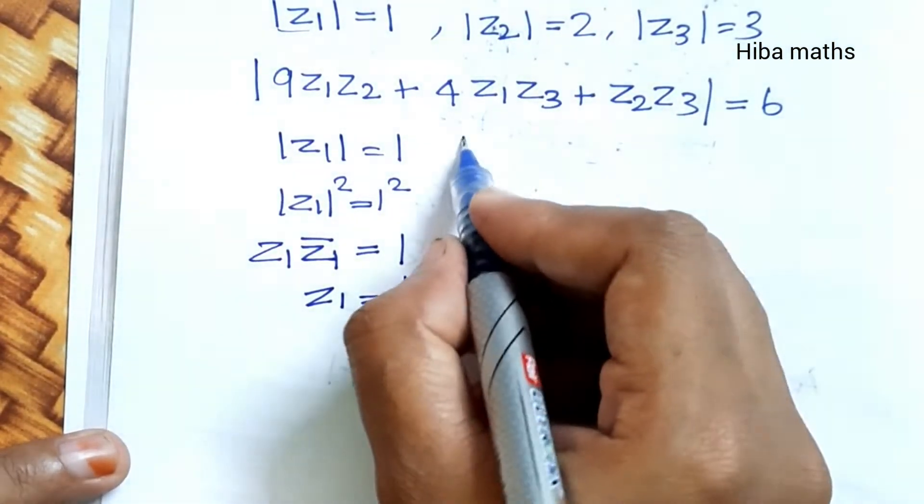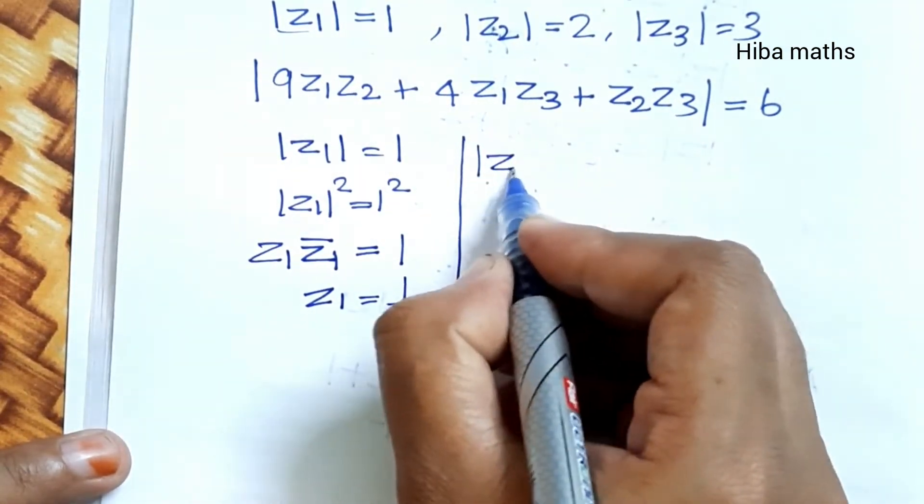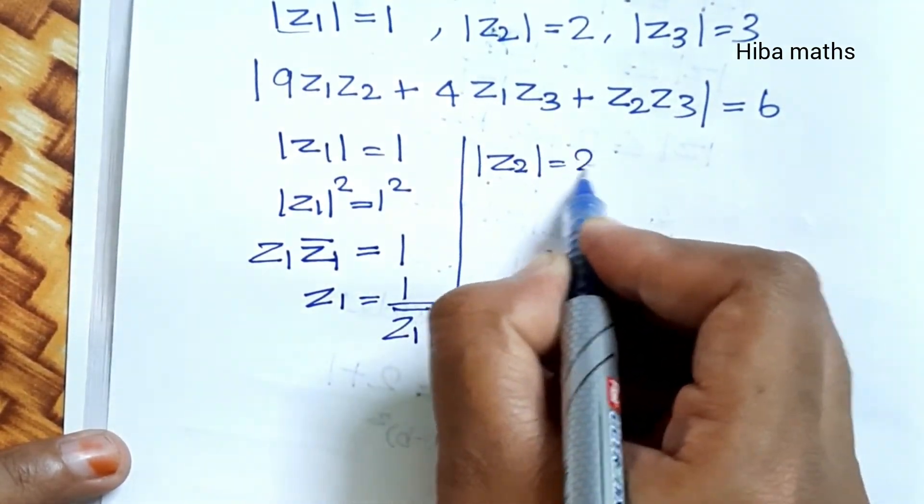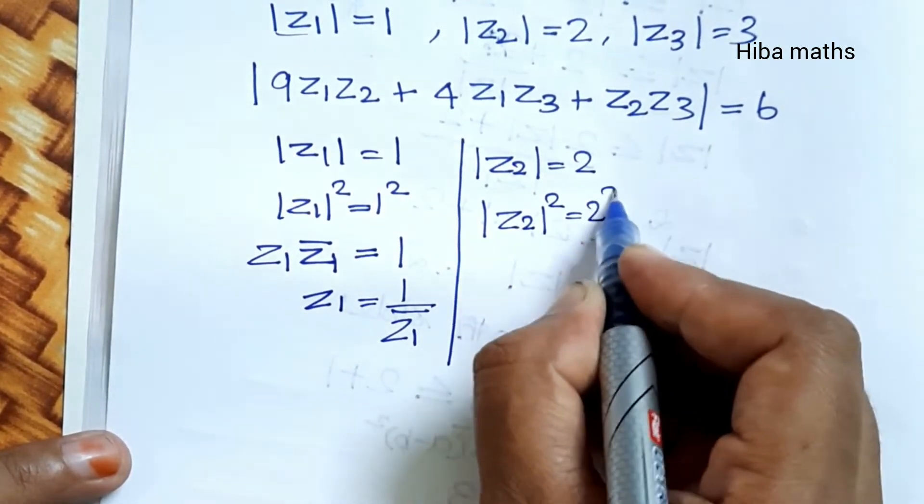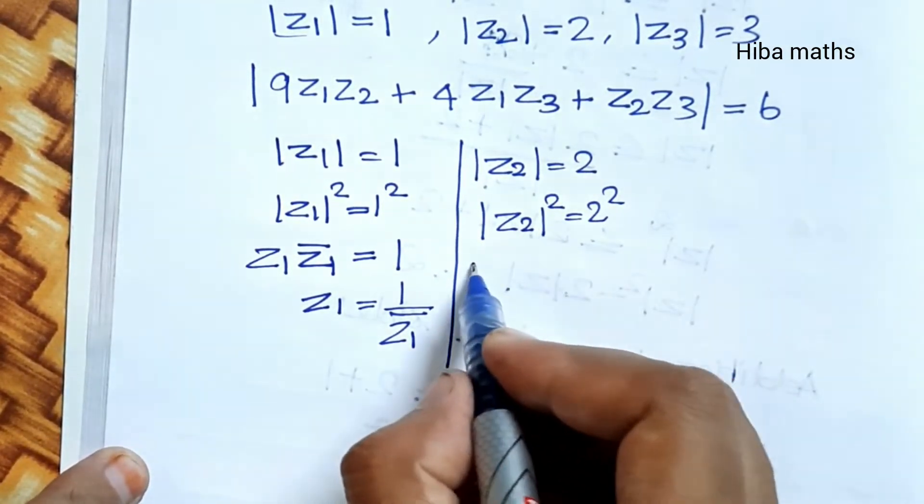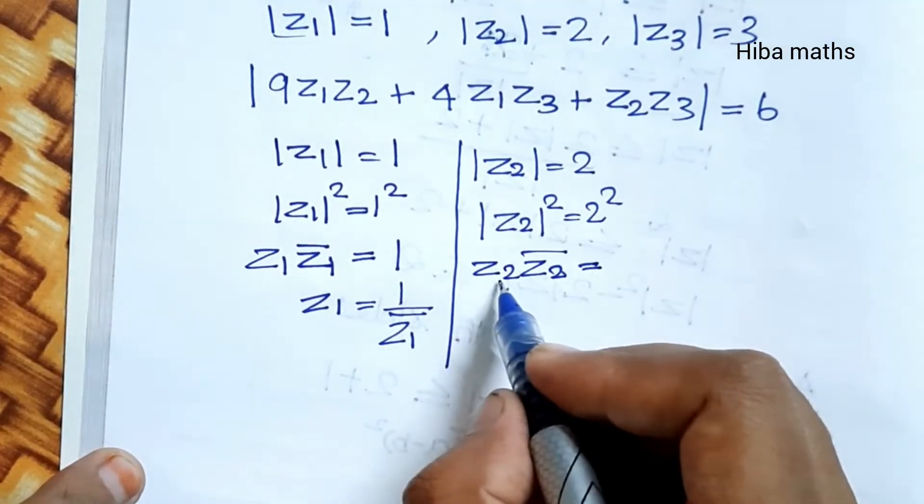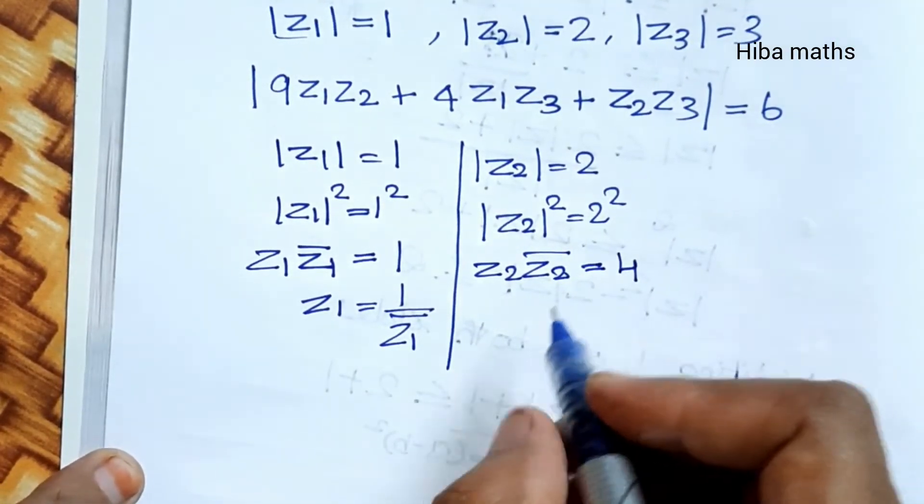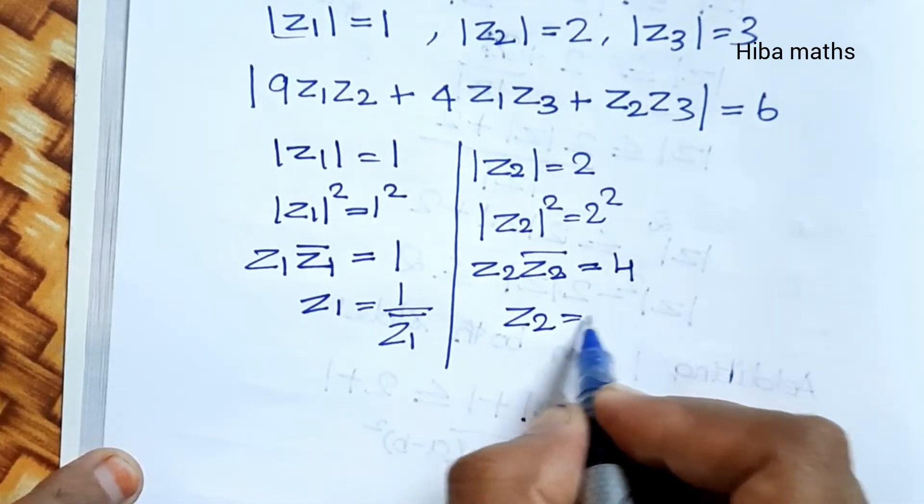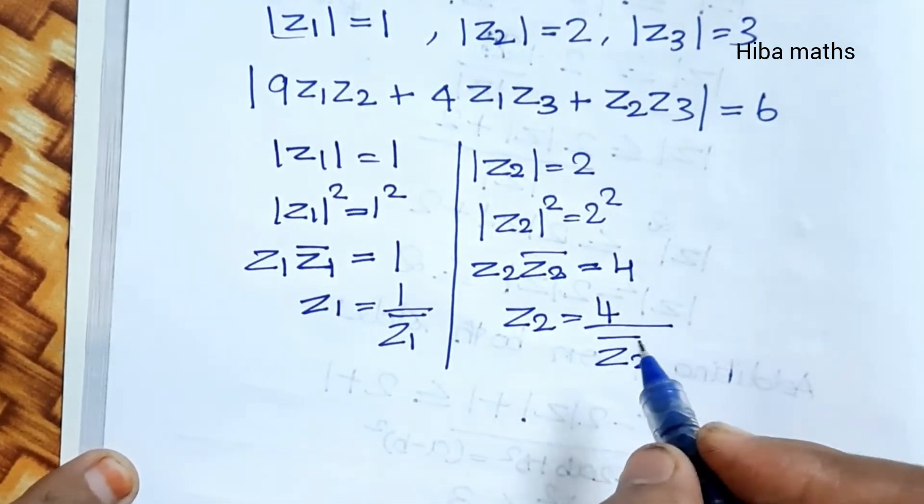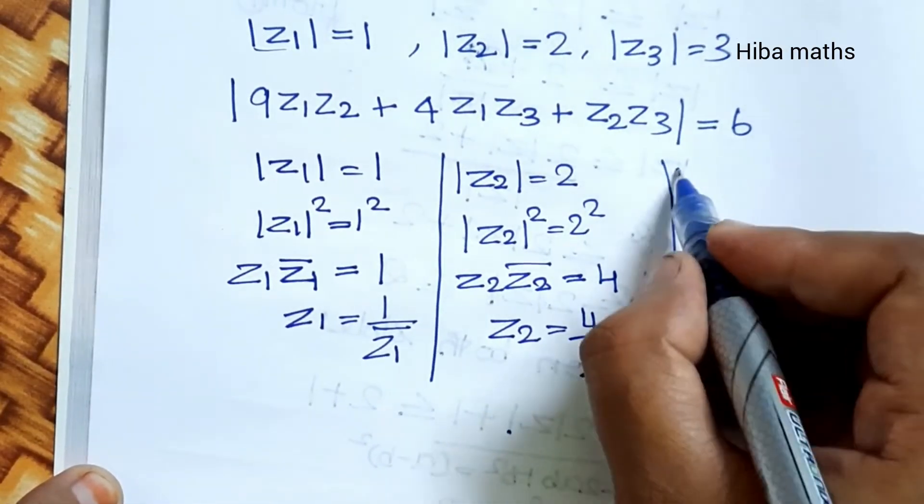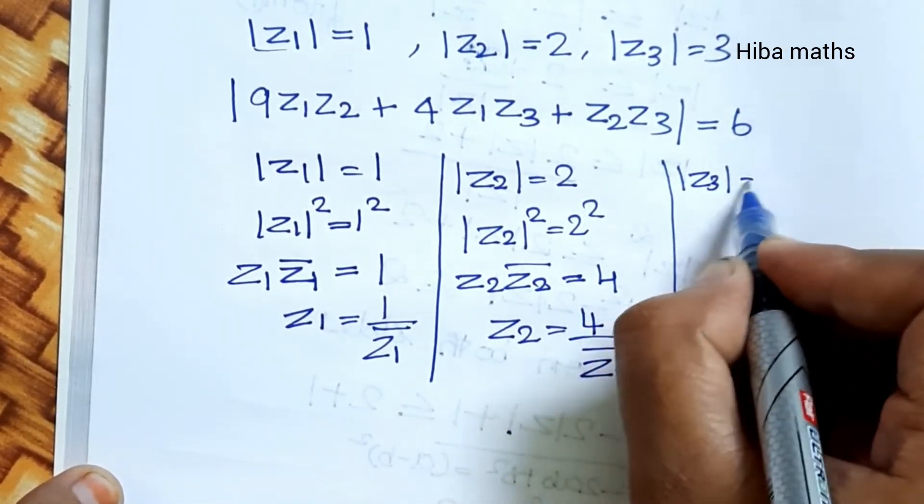This is done with Z1. Modulus of Z2 is equal to 2, squaring on both sides. Modulus of Z2 whole square is equal to 4. So Z2 times Z2 bar equals 4.